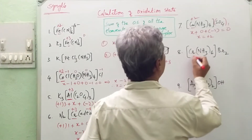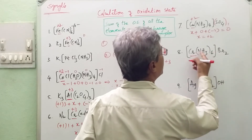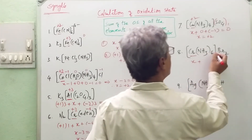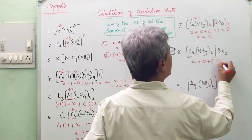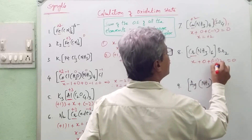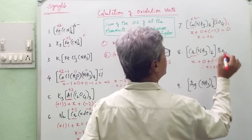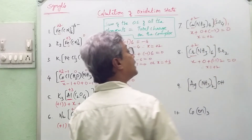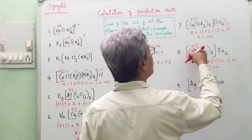Similarly, for chromium, let it be x. Ammonia is neutral: 0 × 6 = 0. Plus Cl with charge minus 1, appearing 2 times. Total charge on this complex is 0. This means: x − 2 = 0, therefore x = +2. The metal is in the +2 oxidation state. If the number of Cl were 3, then the oxidation state would be +3.